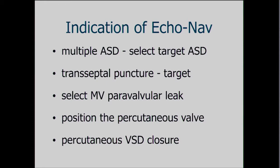Also, when performing transseptal puncture we usually puncture the center of the atrial septum, but in some cases we need to puncture a little bit posterior and superior to cross the paravalvular leak on the medial side of the mitral valve — which is very difficult. For this purpose, we can easily puncture that site using echo navigator. It is also very easy to select the mitral valve paravalvular leak with a wire using this imaging modality. It can also be used for positioning percutaneous valves in the pulmonic, aortic, or tricuspid position, and for percutaneous fistula closure.